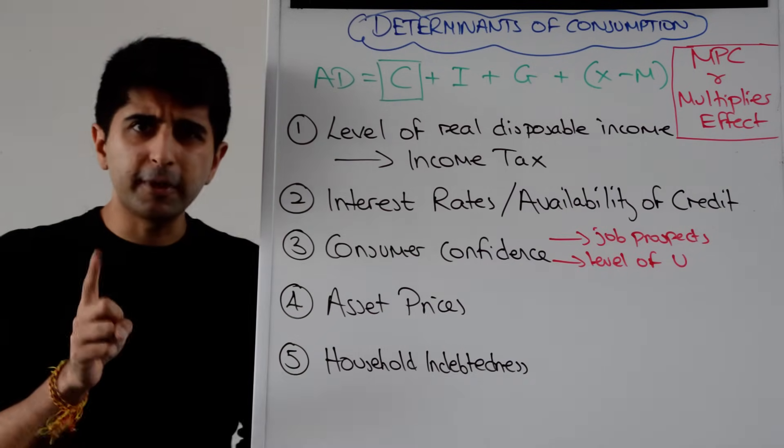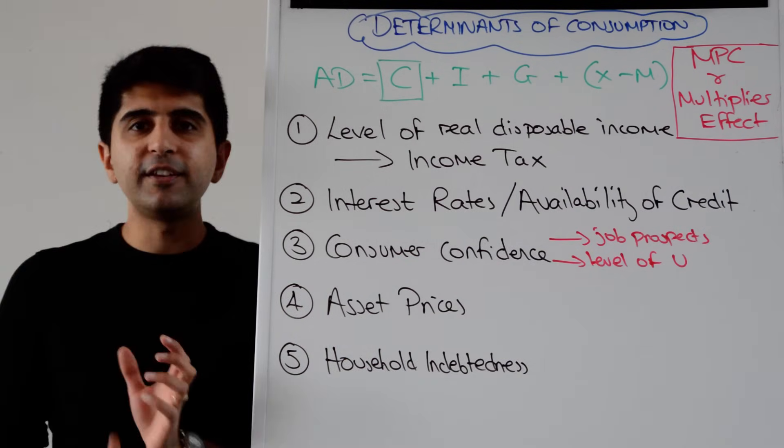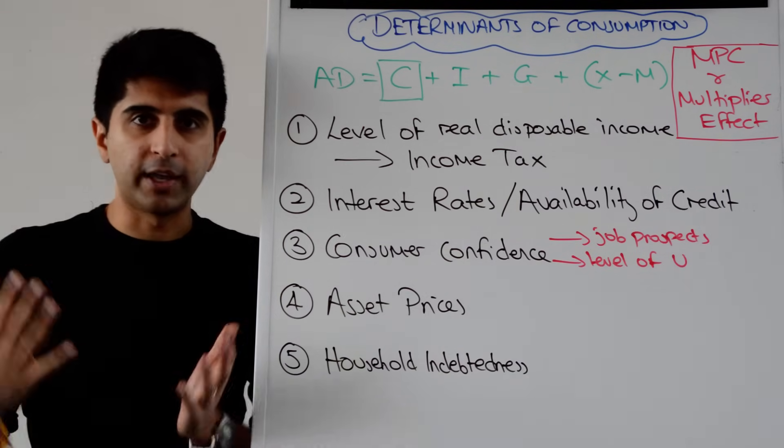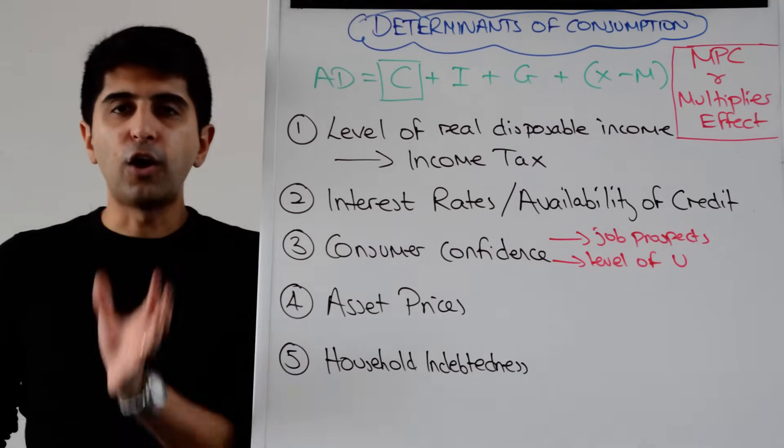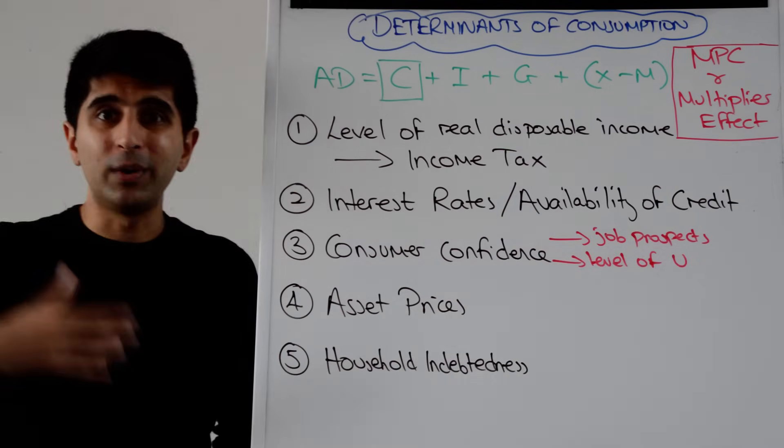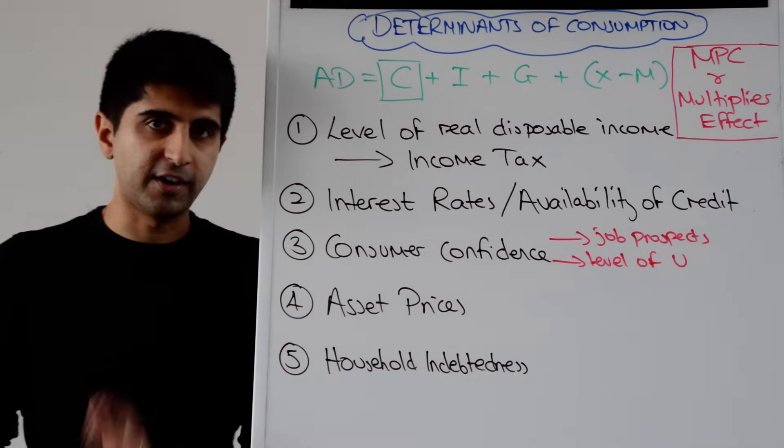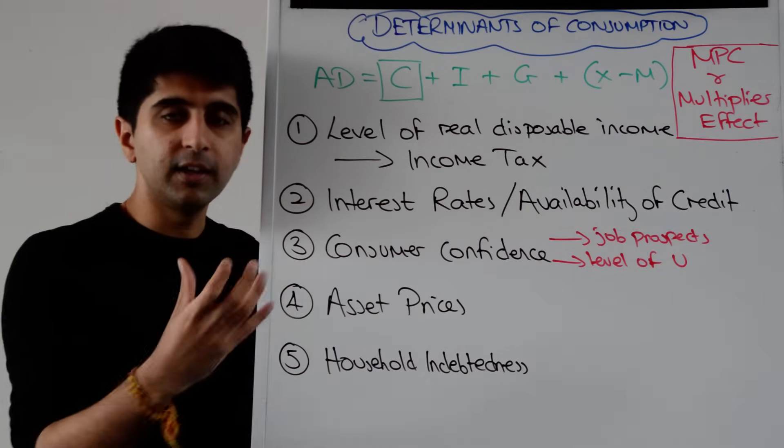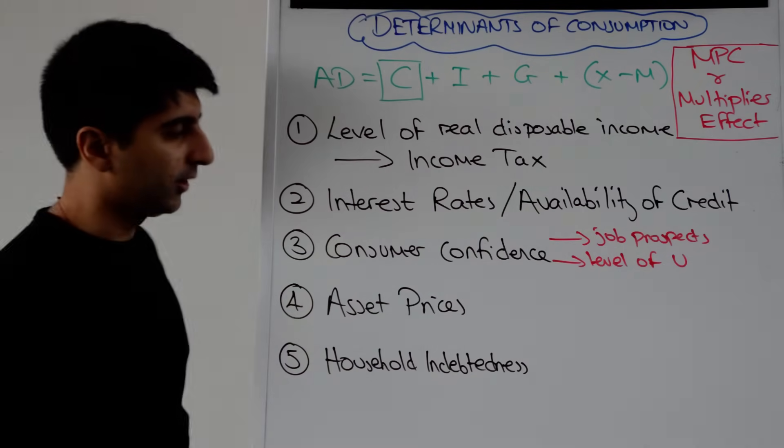You also must bear in mind the availability of credit. If the availability of credit is low then this can reduce the impact of borrowing. This can reduce the impact of lower interest rates because simply banks are not willing to lend if the availability of credit is very low. So that's something that can stop this happening. It's something else which will affect C in the aggregate demand equation.